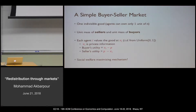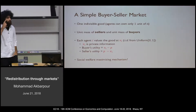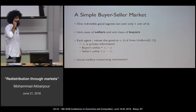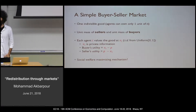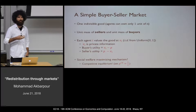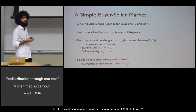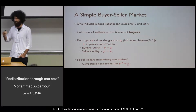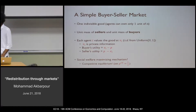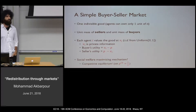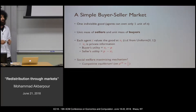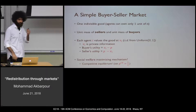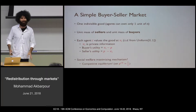In this environment, the social welfare maximizing mechanism is the competitive equilibrium. Set the competitive equilibrium price, which is one-half given the uniform distribution. All sellers below one-half sell, all buyers above one-half buy, the market clears exactly, and this maximizes welfare. So we are basically done with the talk—with one caveat.